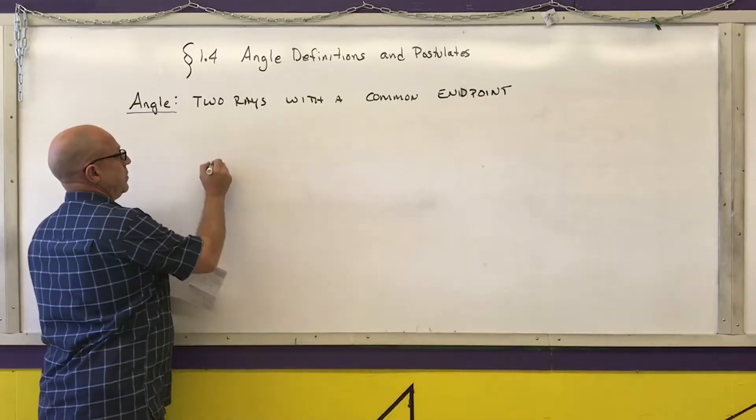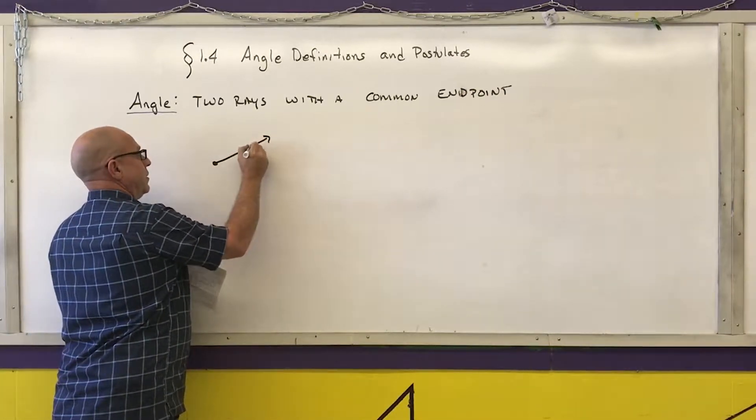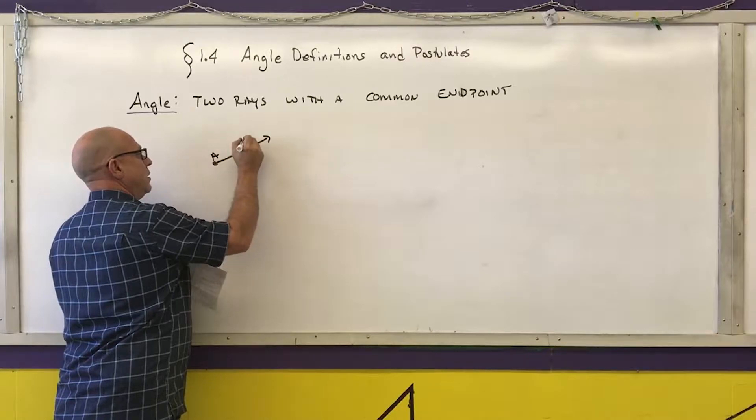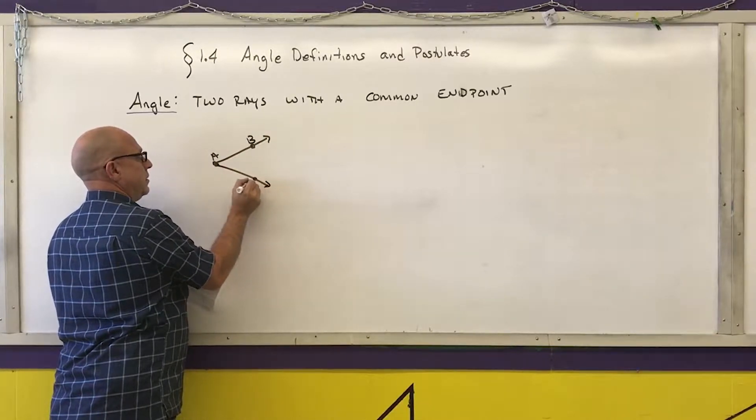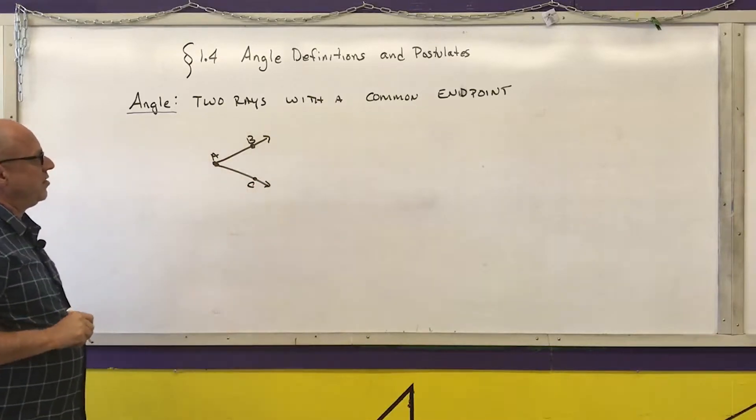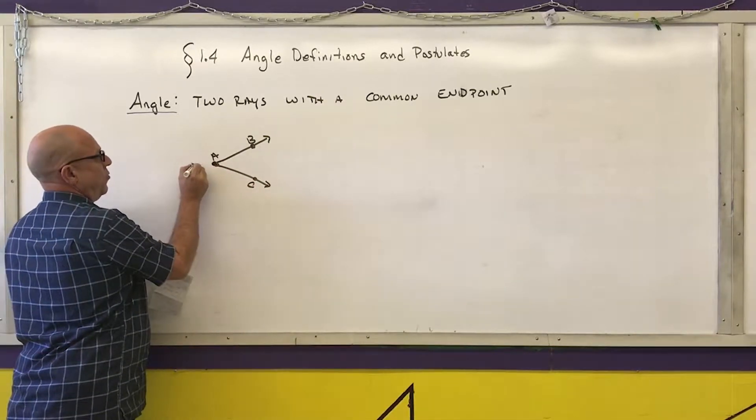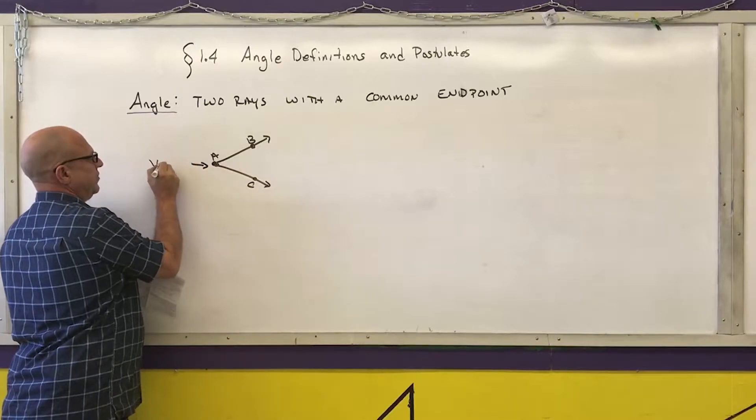So I'll draw the ray AB, I'll draw the ray AC, and they have the common endpoint A, where point A is called the vertex of the angle.